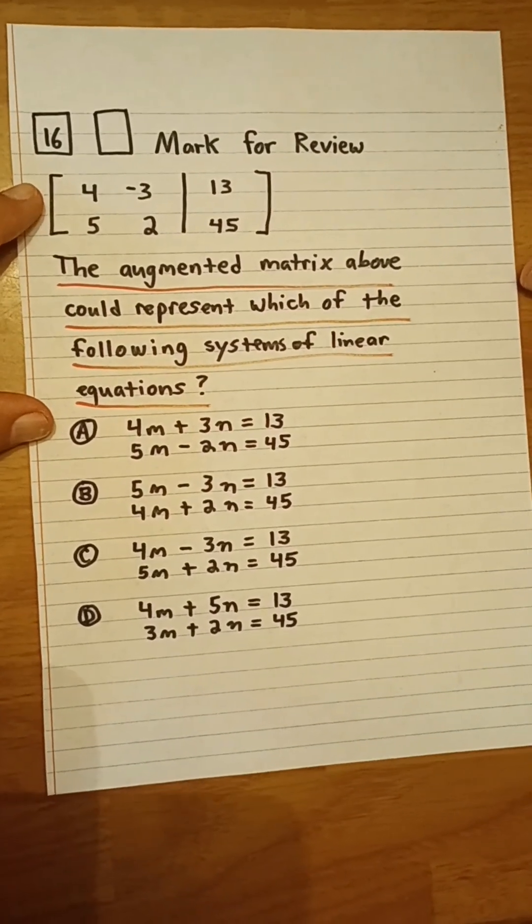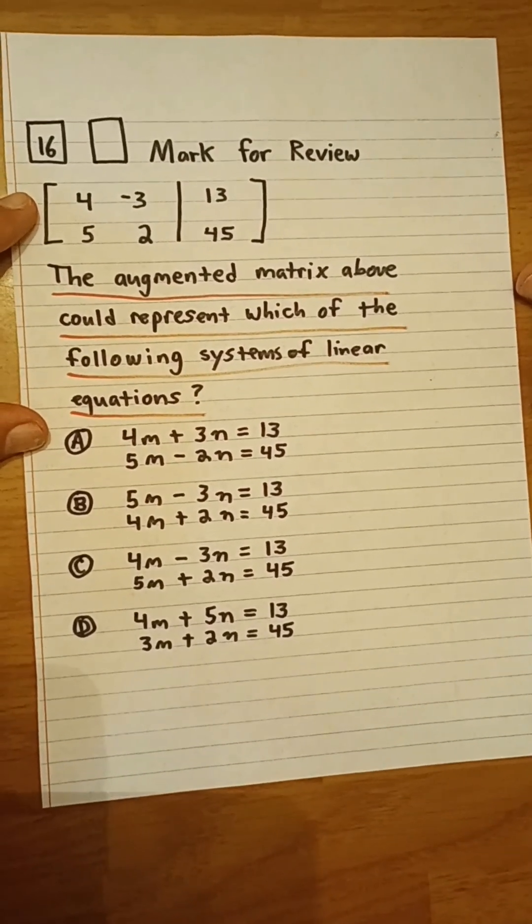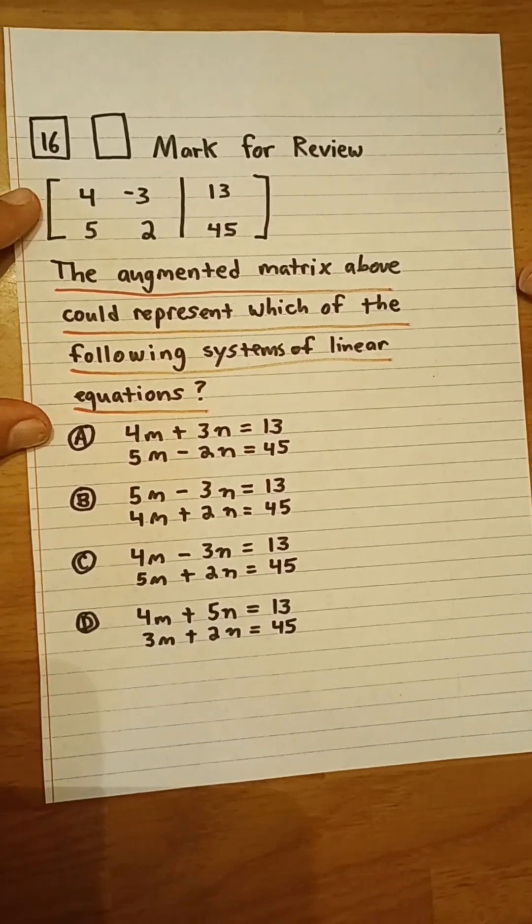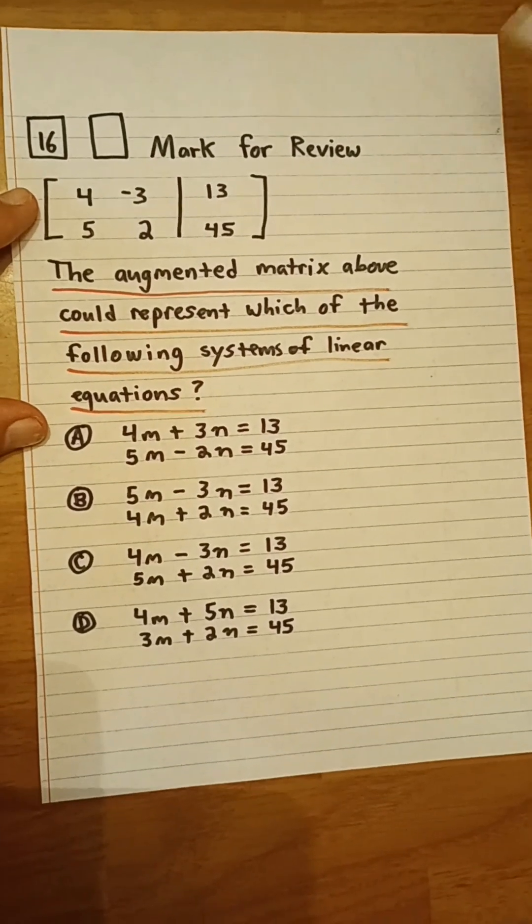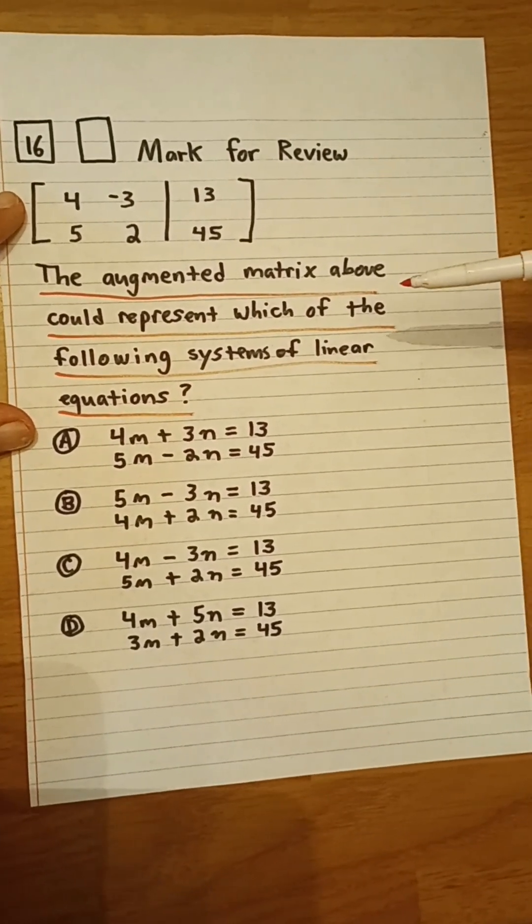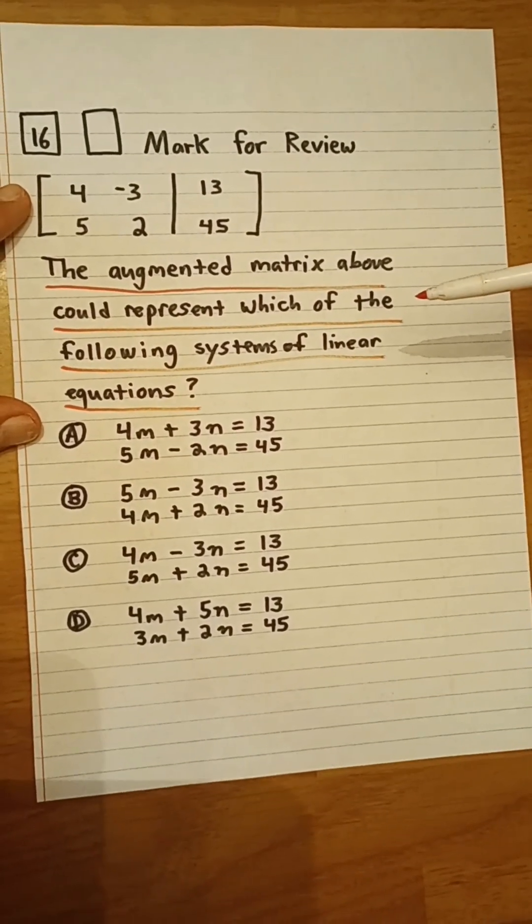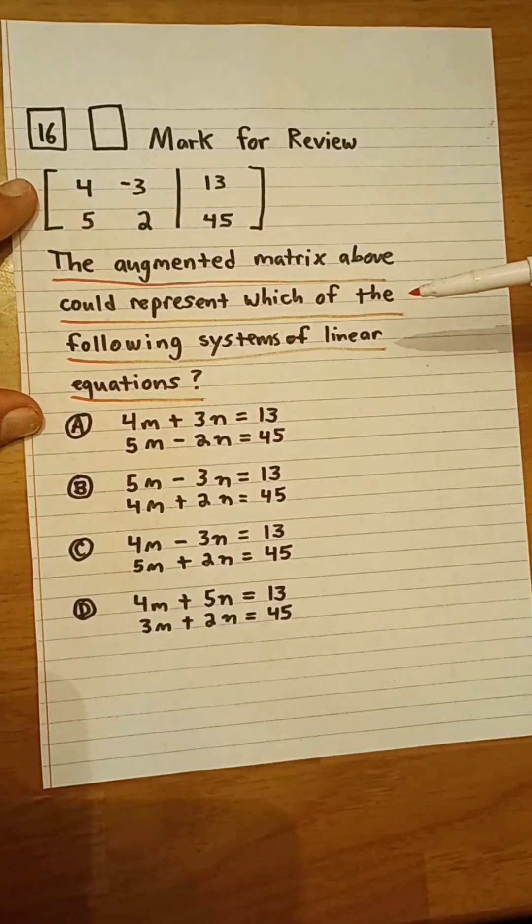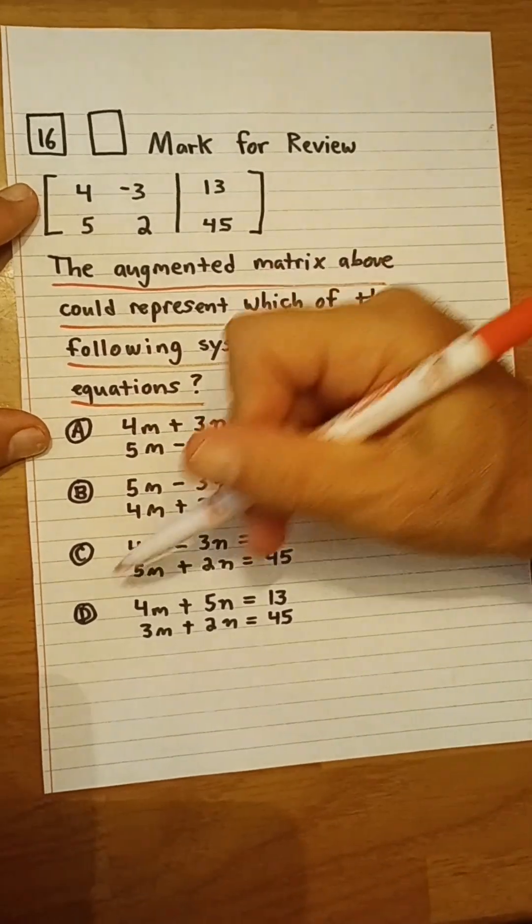The first row of the matrix would equate to the coefficients for the first equation, 4 and negative 3. This means that the first equation should be 4m minus 3n equals 13, and only C has that.